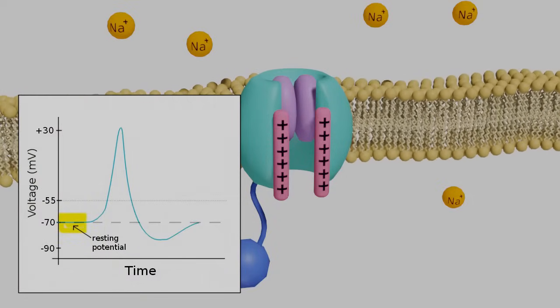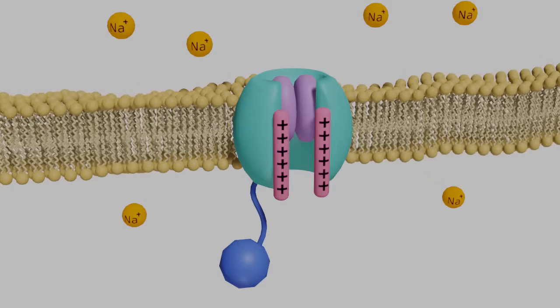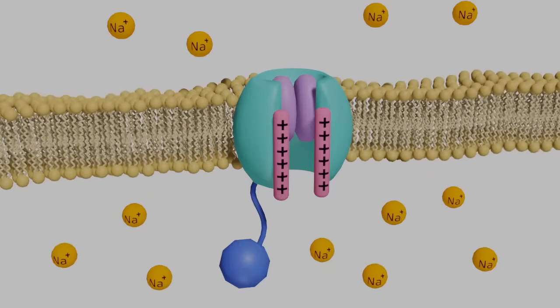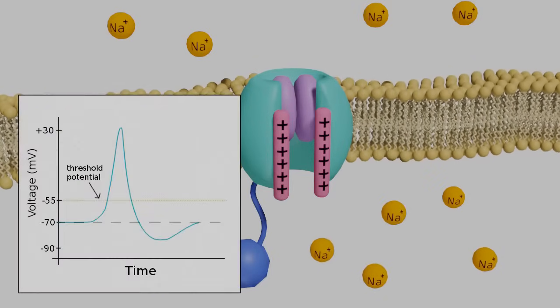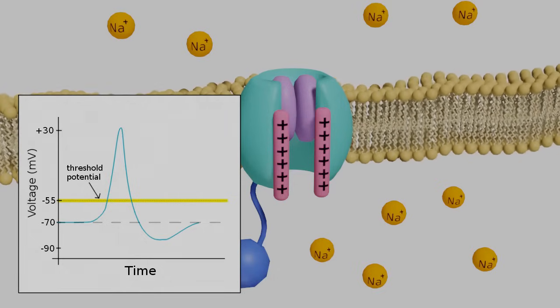However, if the neuron is receiving an excitatory signal, the number of sodium ions increase within the cell. If we reach the threshold potential, this will repel the positive charges on the voltage sensors and cause them to move up.